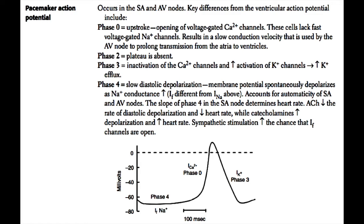Phase four is the most important phase for pacemaker cells because it determines heart rate. Phase four is a slow diastolic depolarization caused by the funny current. This is a membrane potential that spontaneously depolarizes as sodium conductance, or NAG, increases. This funny current is different from the voltage-gated sodium channel seen in non-pacemaker cells and accounts for the automaticity of the sinoatrial and atrioventricular nodes. The slope of phase four in the SA node determines the heart rate — the higher the slope, the faster the heart rate.